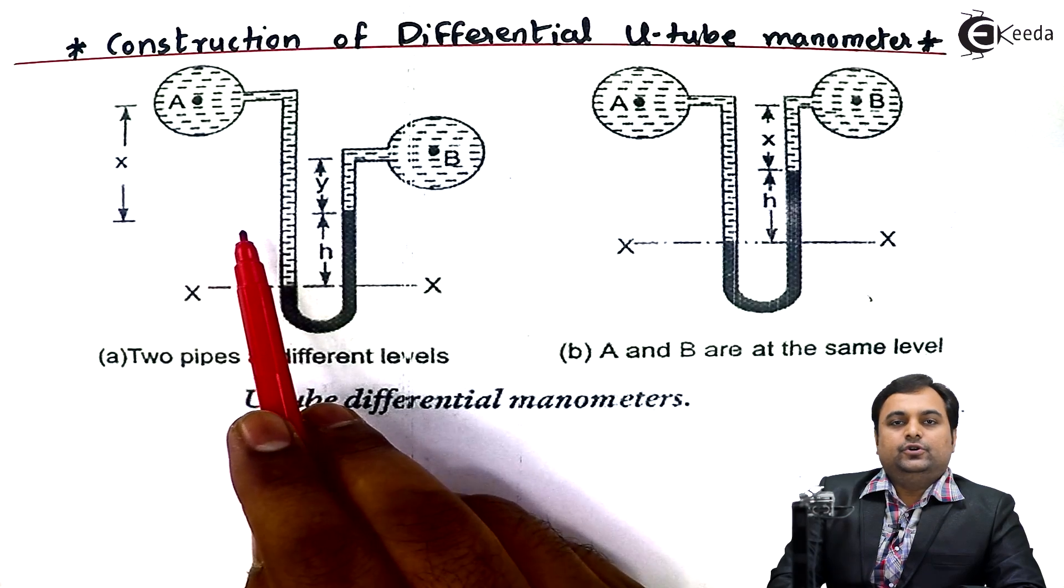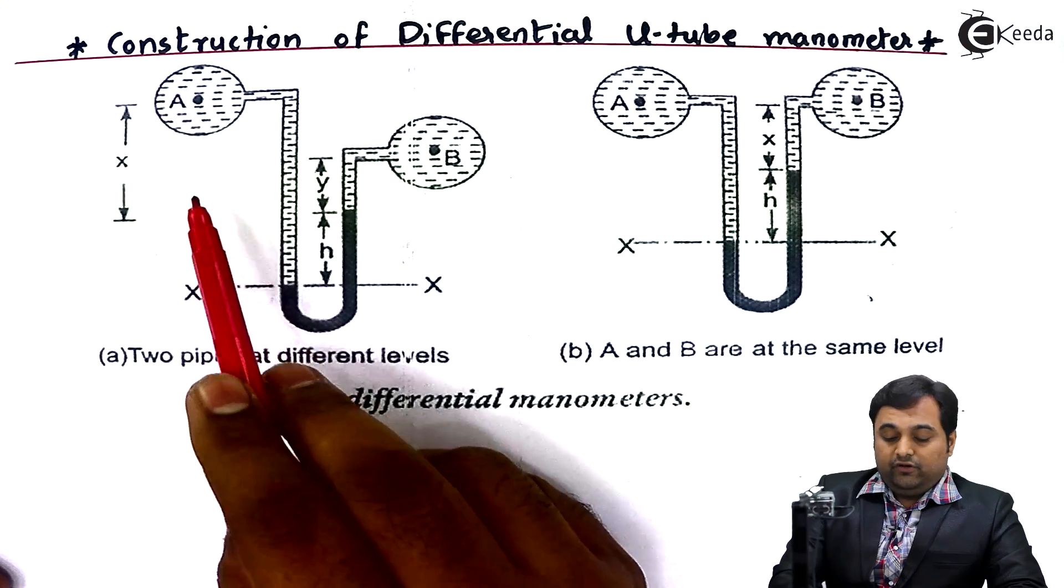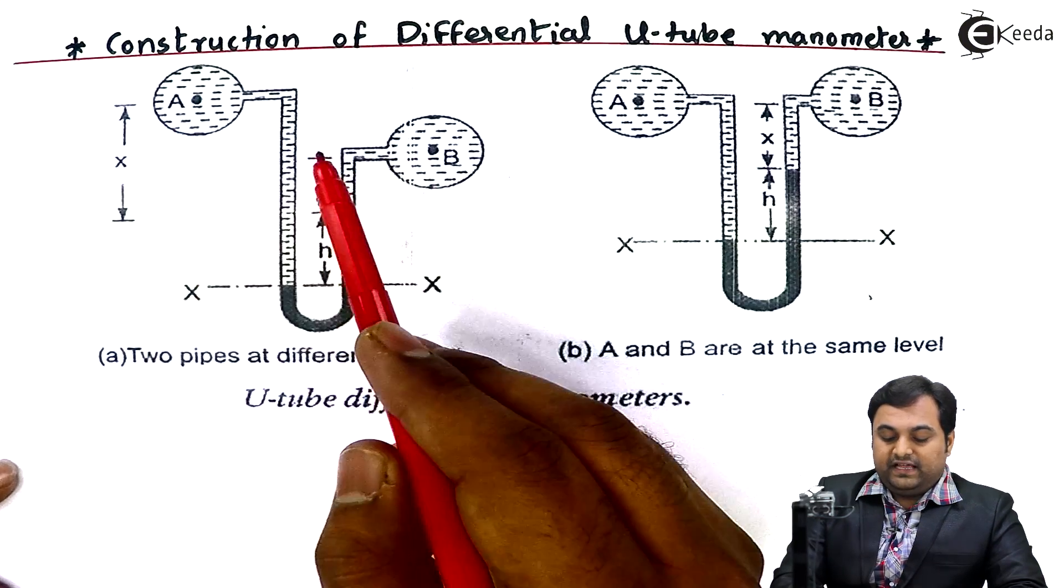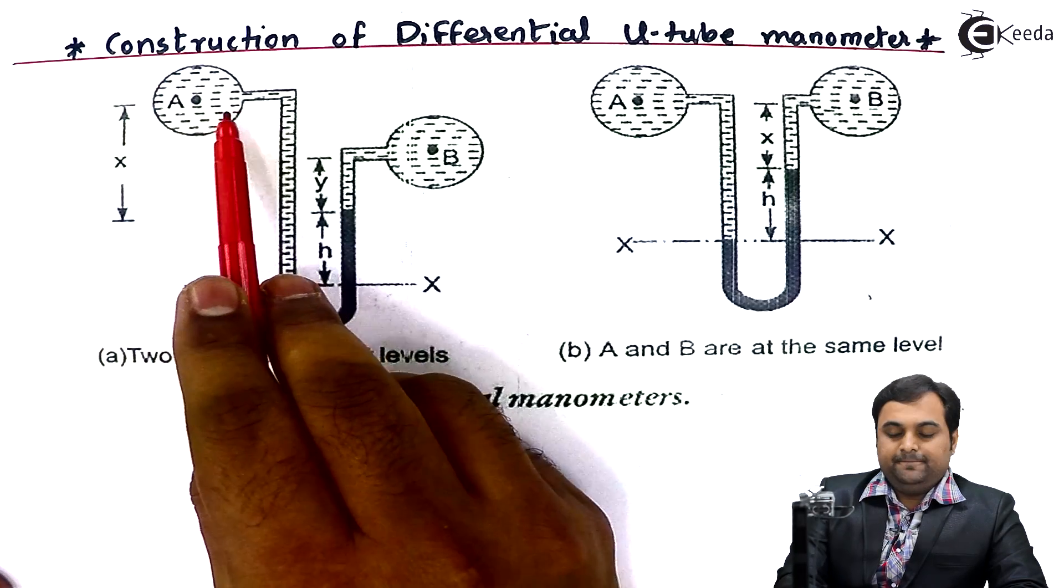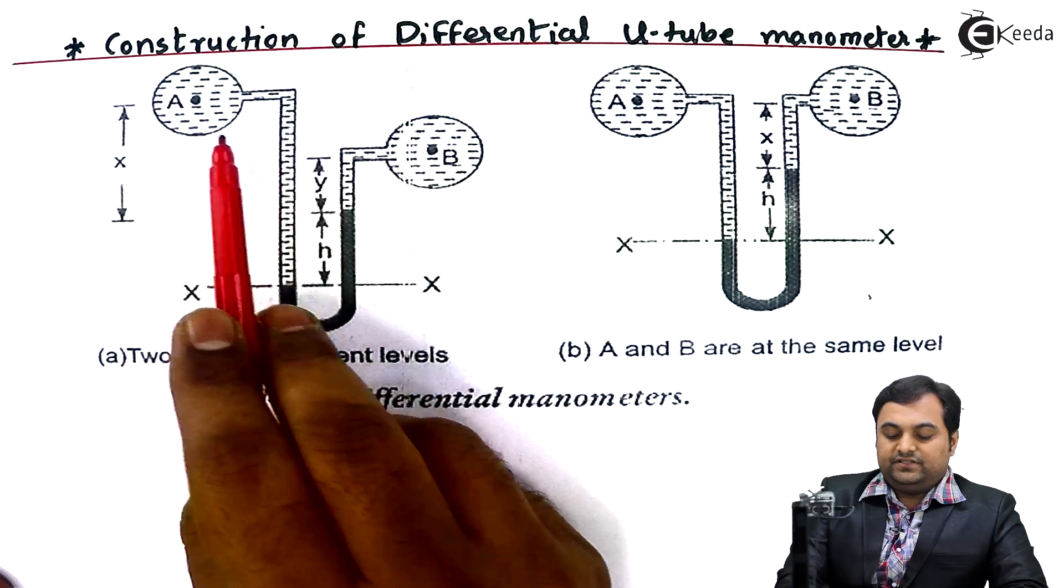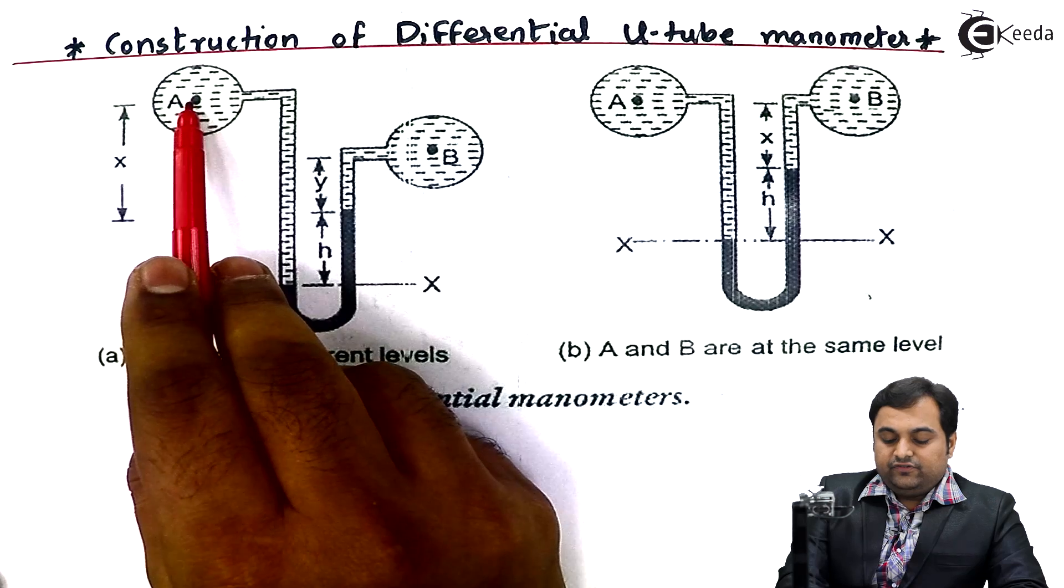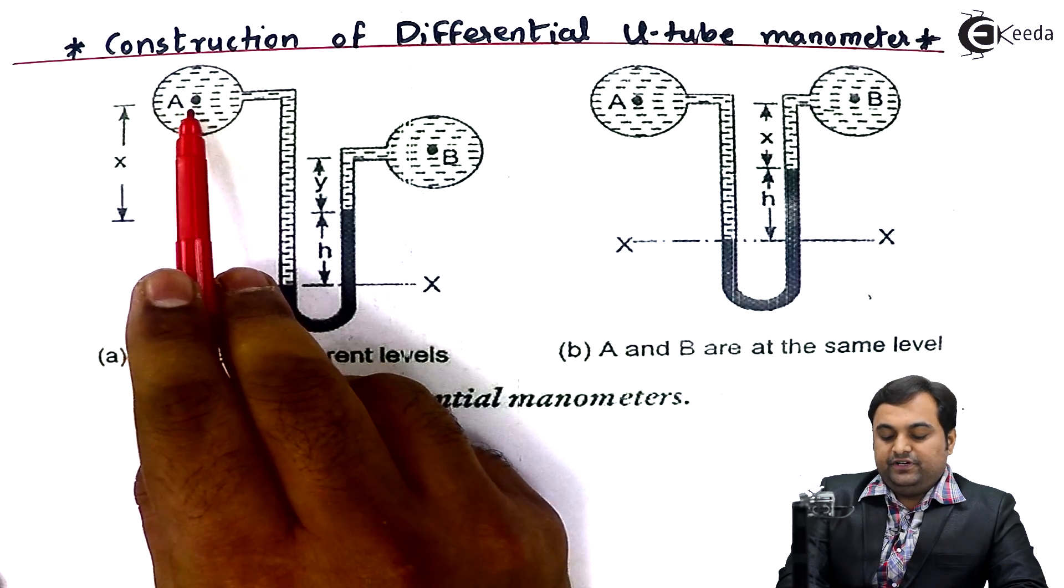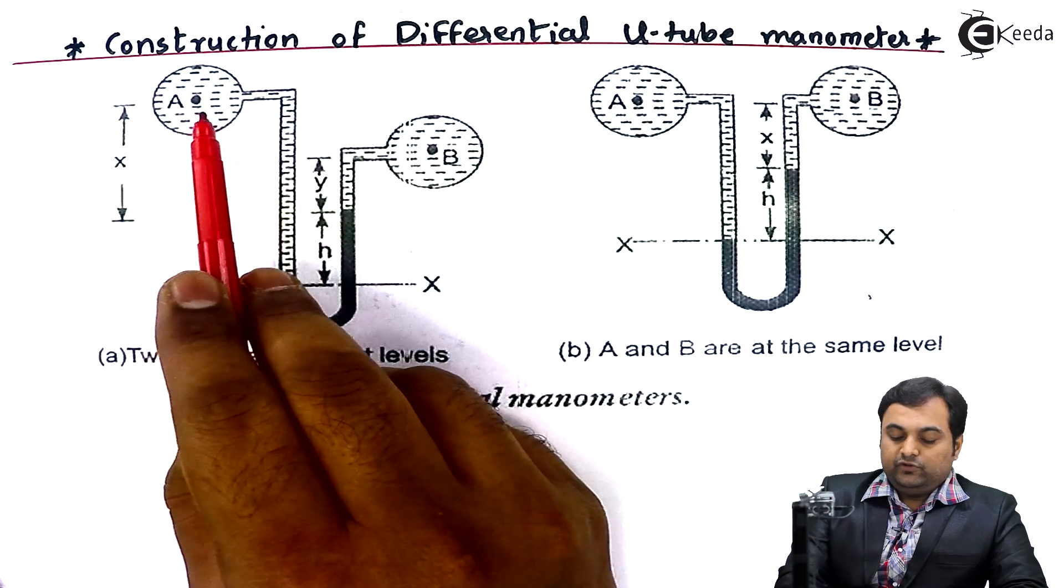Now, differential manometer is used in a pipeline to measure difference of pressure between fluids in two pipelines. As we can see in the first figure, we have pipeline A and pipeline B. Both the pipelines can contain different liquids.